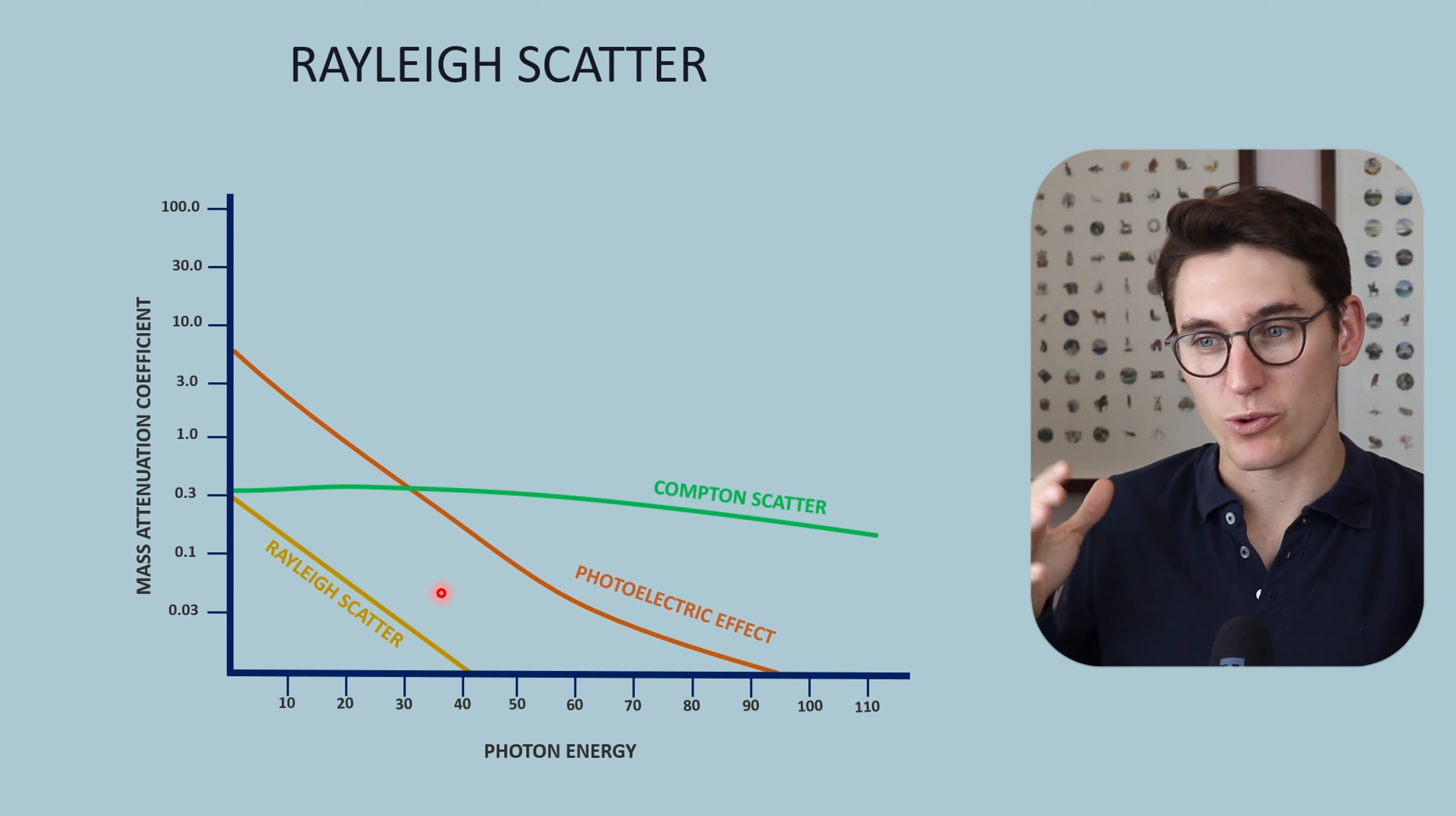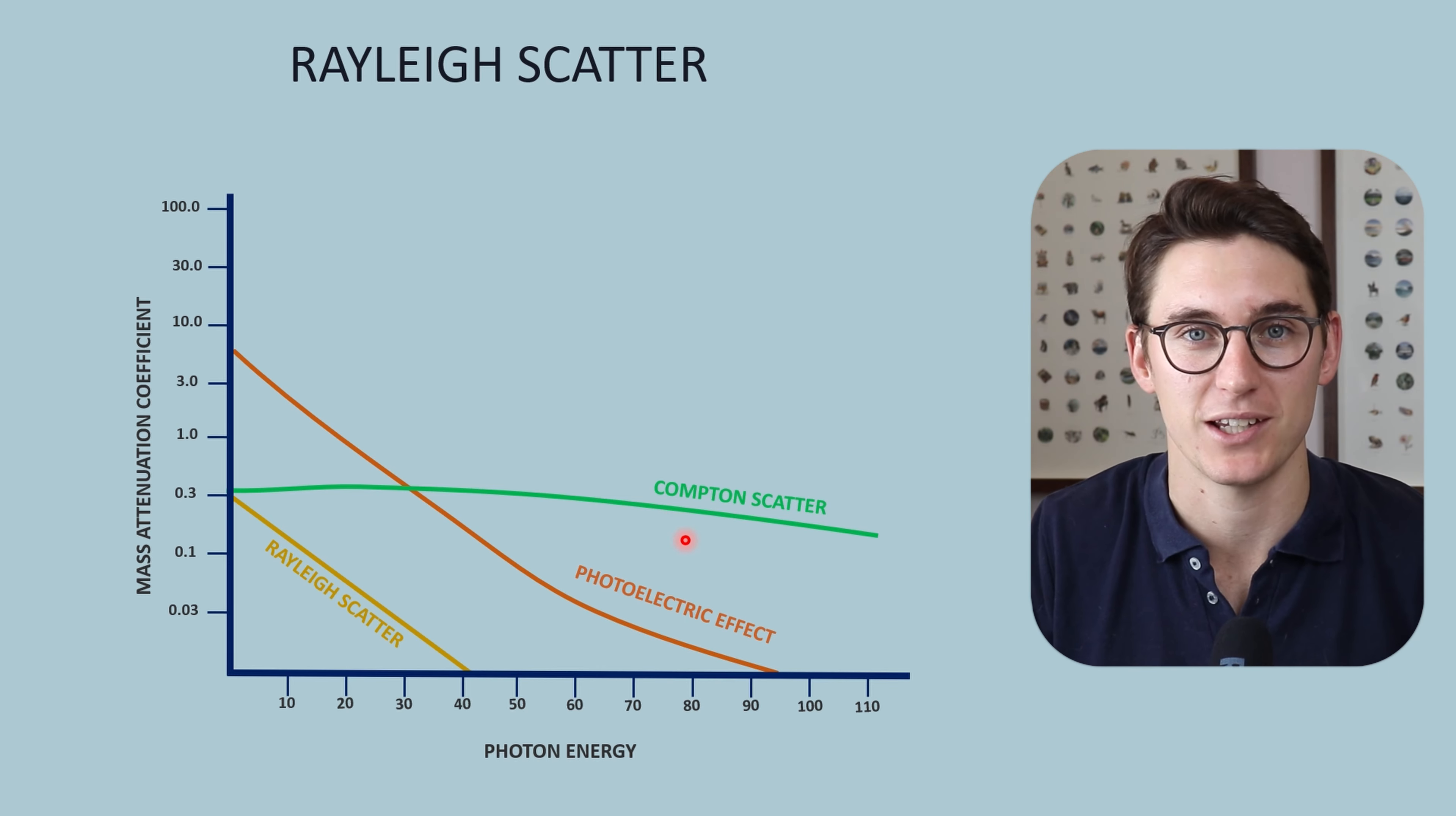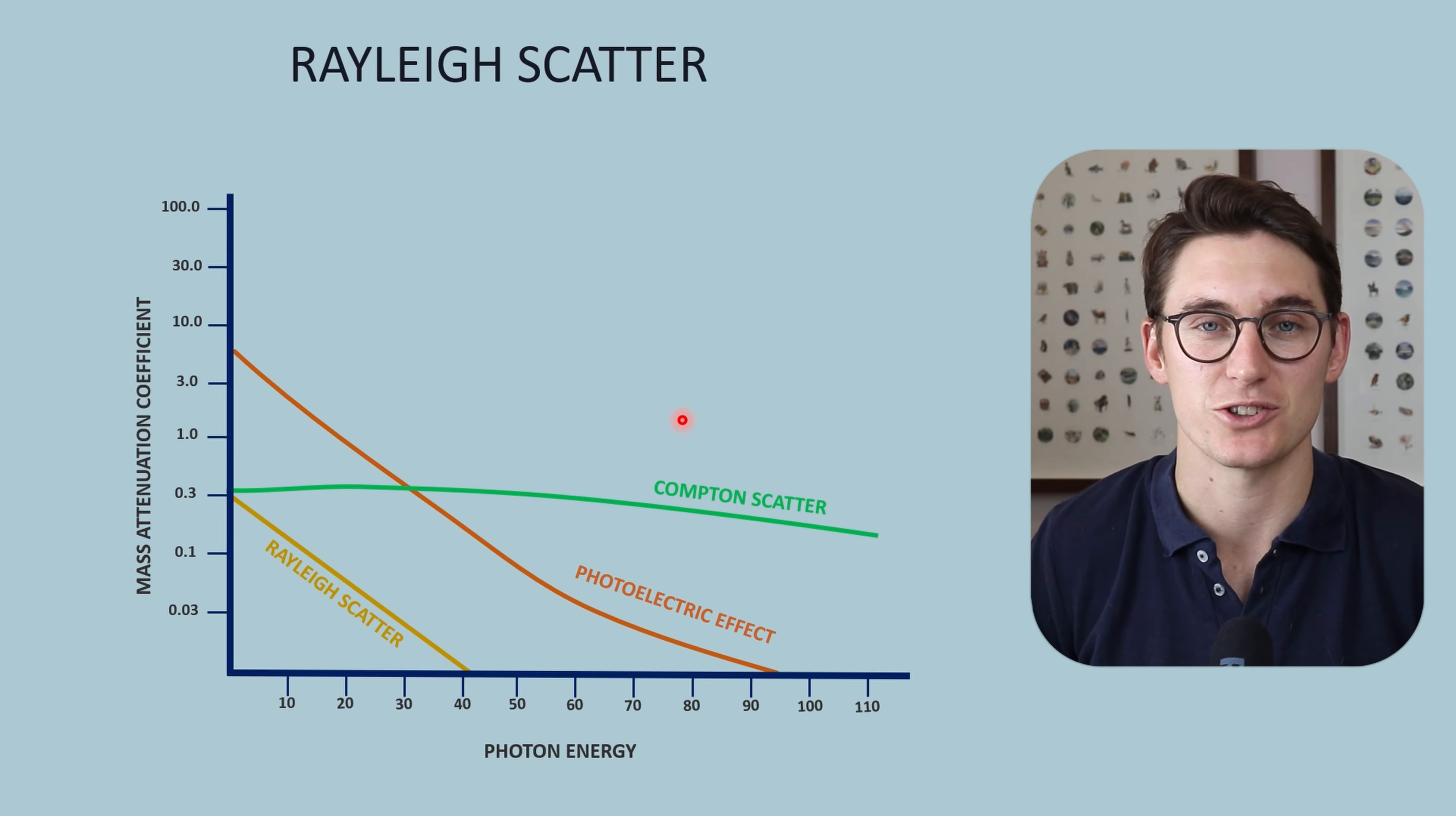That's why Rayleigh scatter really comes up on its own within an exam. It's often part of a multiple choice question or it's part of a list when you have to list the types of interactions that can happen in matter. A really common question that comes up is, does Rayleigh scatter contribute to patient dose? And as we've seen before, there's no photoelectron being released, therefore no dose released onto that patient.